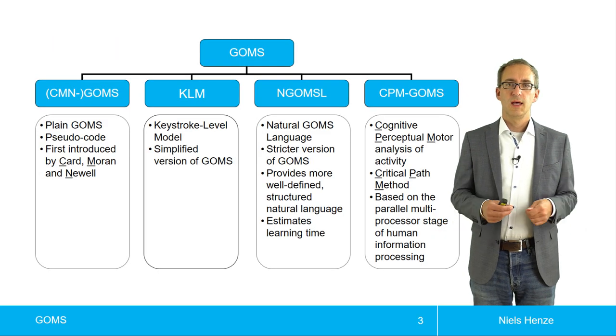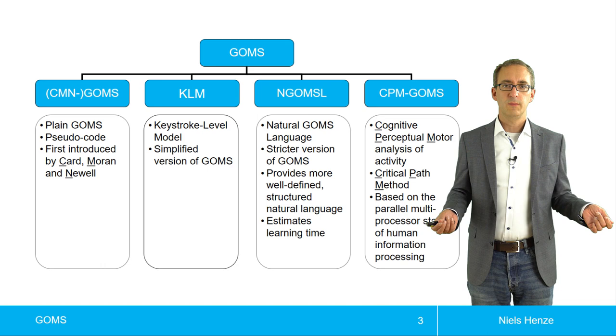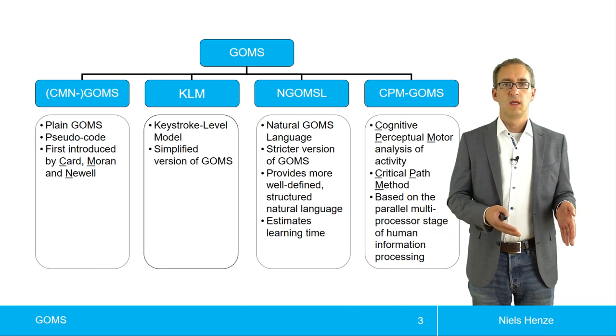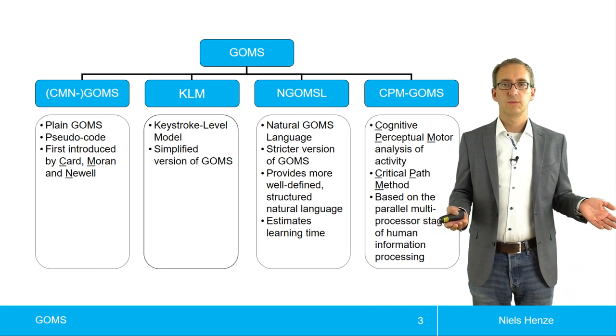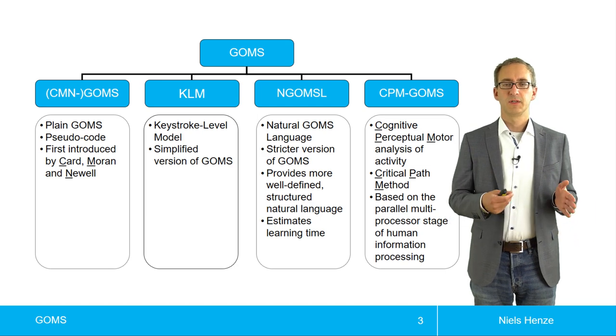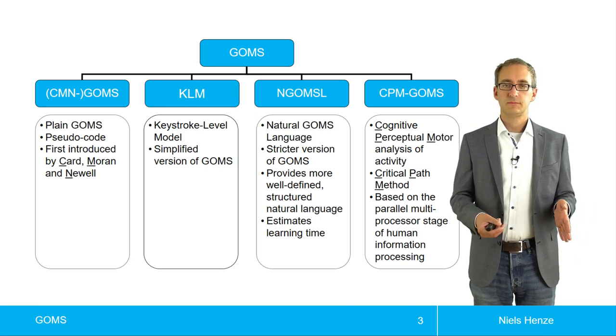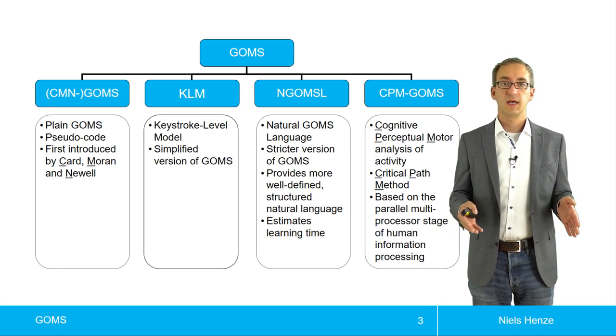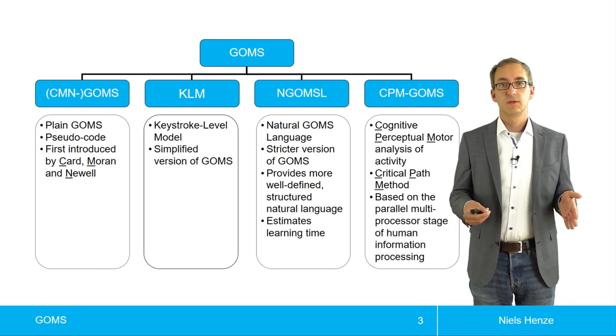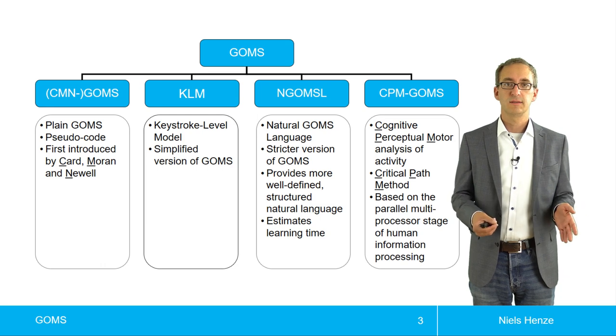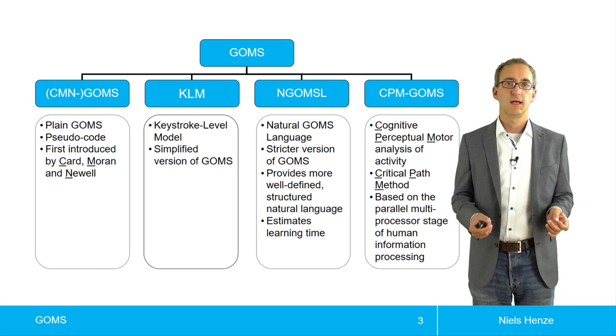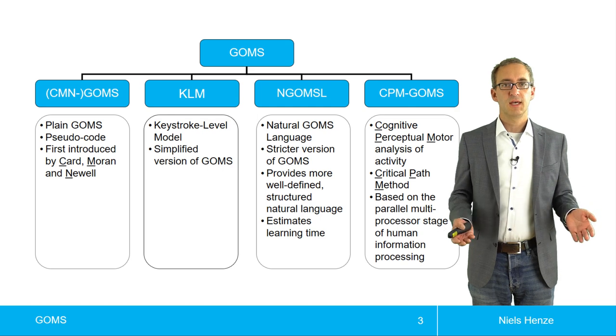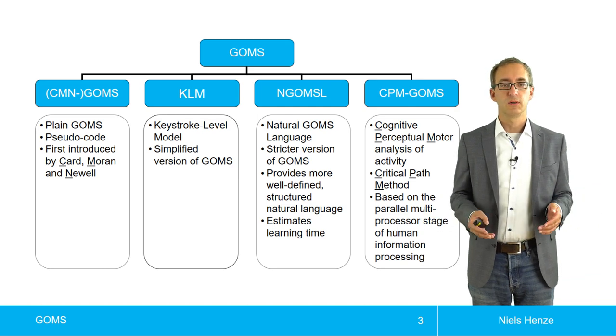So as I said, GOMS is a whole family of models and KLM is one of them. KLM stands for keystroke level model. And because it's so simplified, it can still predict task completion times. One simplification is it has no selection rules. Another one is that the operators are predefined. That's not the case for the other GOMS models.